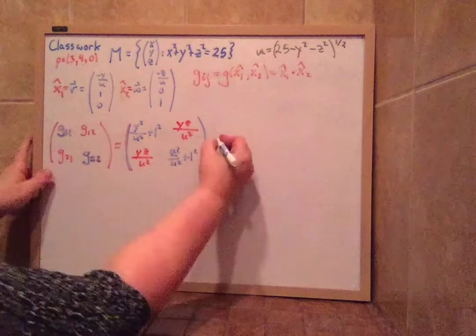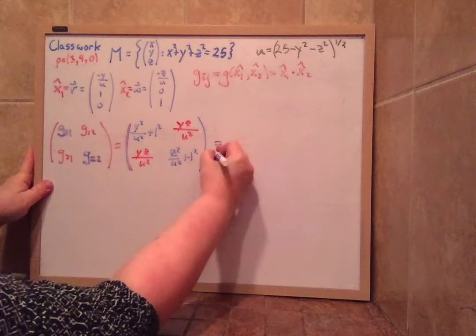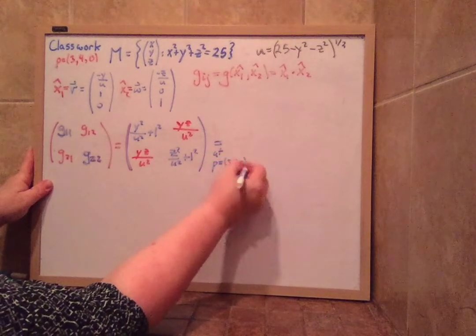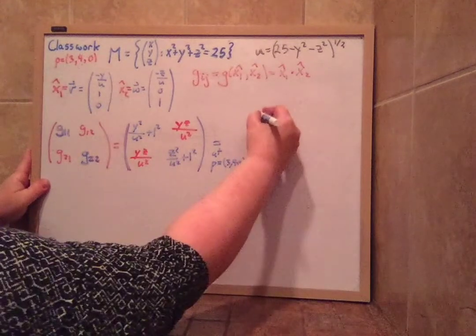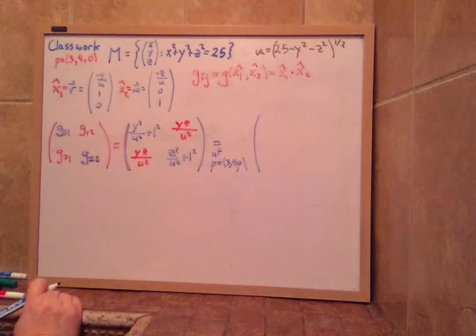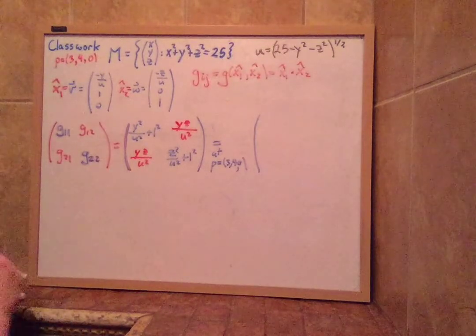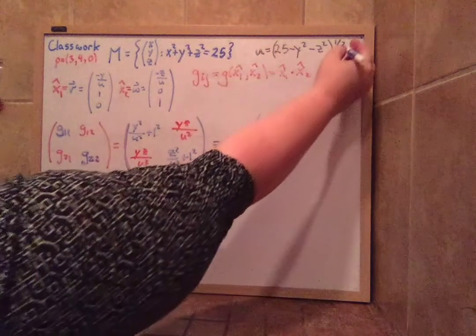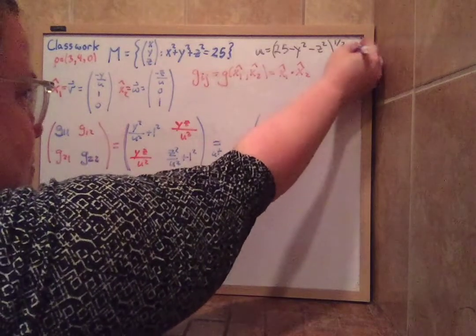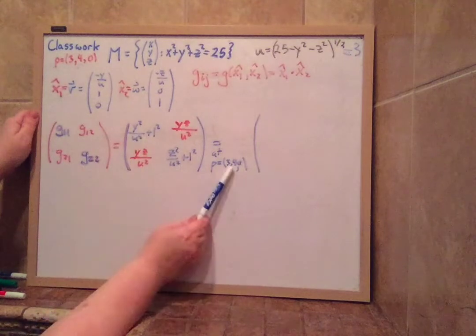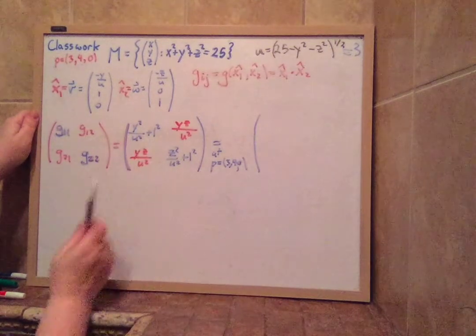So if I put its value at the point, at p equals 3, 4, 0, what do we get for our matrix? 4 squared over what was u? We figured that out before in our prior classwork. We used that u was, in fact, equal to 3. So this is 3.